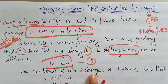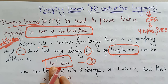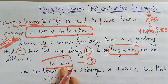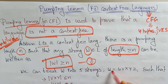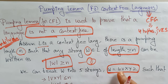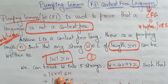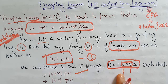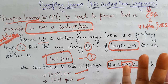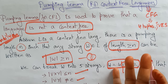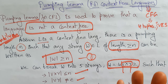We can break w into five strings: w = u v x y z, such that |vxy| ≤ n, and |vy| is not equal to zero — meaning v and y cannot both be empty. It is based on v and y that we decide whether the given language is context-free or not.